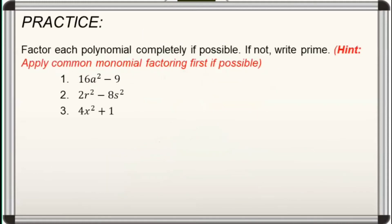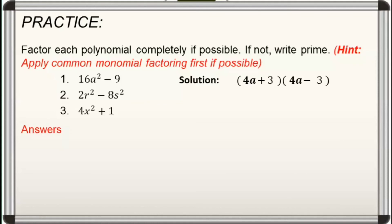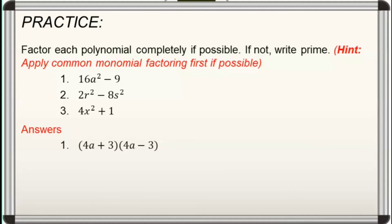Let's have more practice. Factor each polynomial completely if possible. If not, write prime. For your hint, apply common monomial factoring first if possible. Let us discuss the answers. For number one, it's obviously a difference of two squares, so its factors must be a product of sum and difference of two terms. Alam natin na ang square root ng 16a squared ay 4a, ibig sabihin ang first terms ng ating factors ay 4a. Ganon din sa 9 — ang square root nito ay 3, ibig sabihin ang second terms ng ating factors ay 3. Therefore, ang factored form ng 16a squared minus 9 ay quantity 4a plus 3 times quantity 4a minus 3, or pwede rin quantity 4a minus 3 times quantity 4a plus 3.